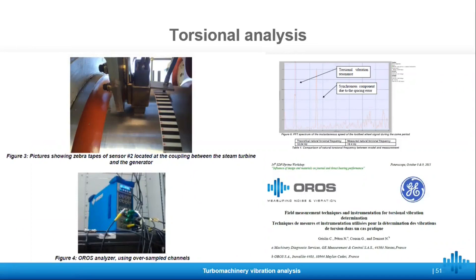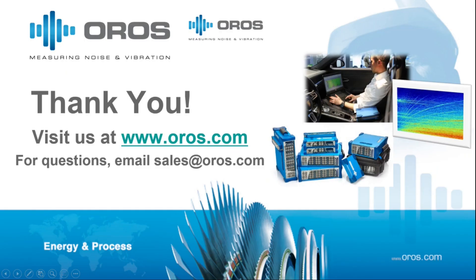To monitor torsion, we can use magnetic pickups or optical probes with zebra tape. For more information about this torsional analysis, we have a paper published with GE about turbines and torsional analysis — please feel free to contact sales at oros.com for a copy if you are interested. Thank you for viewing this presentation. If you would like to see more about our offerings, please visit www.oros.com. If you have any questions or would like more information, you can also email sales at oros.com and we will be glad to help you out. Thank you.